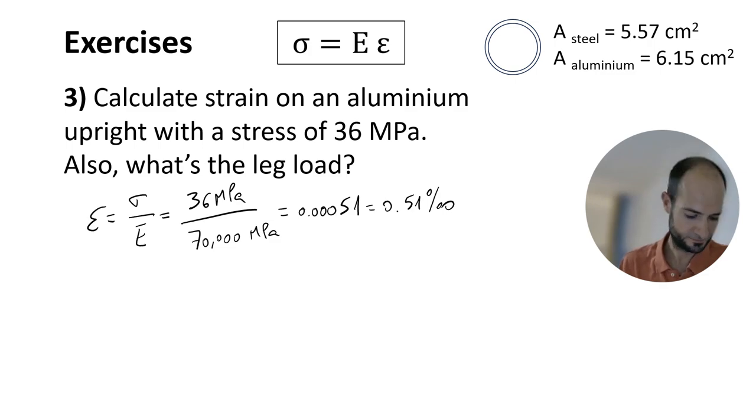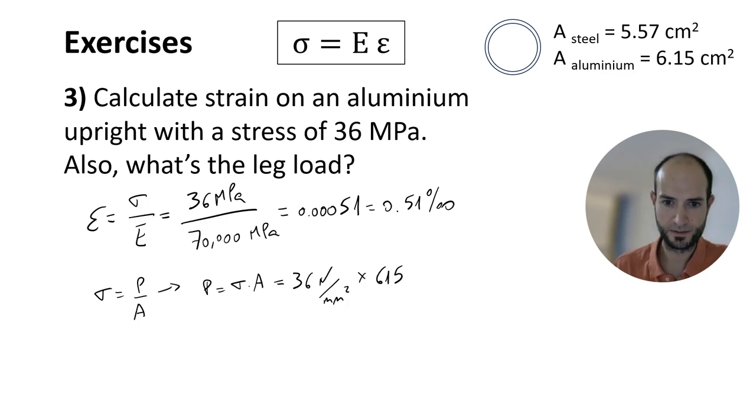Now, the leg load. Same thing as before. If the stress is load over area, the load is going to be stress times area. Here we have 36 times the area, that is going to be 615 millimeters squared.